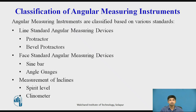Phase Standard Angular Measuring Devices include angle gauges and sine bars. Measurements are done with respect to two faces of the measuring instruments, and the precision obtained is greater than that of line standard devices. For Measurement of Inclinations, the inclination of a surface represents its deviation from horizontal or vertical planes. The gravitational principle is used, with Spirit Levels and Clinometers belonging to this category.